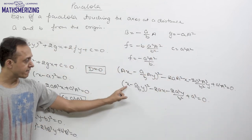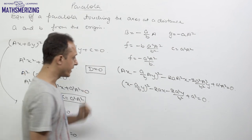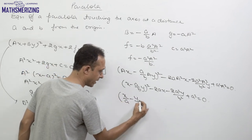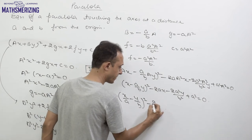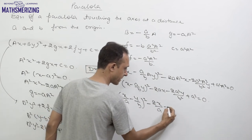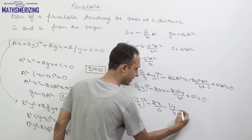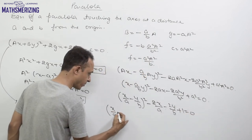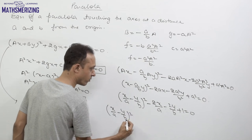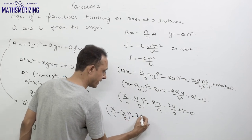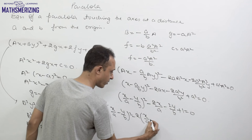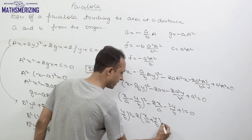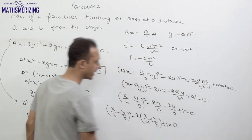Dividing the equation by a² (small a²), we can write: (x/a − y/b)² − 2(x/a) − 2(y/b) + 1 = 0. This can be written as (x/a − y/b)² − 2(x/a + y/b) + 1 = 0.